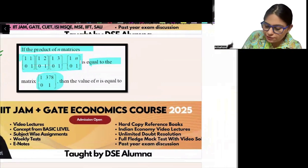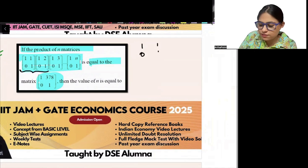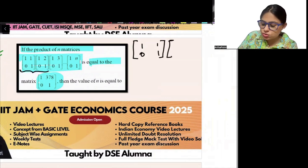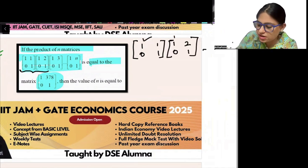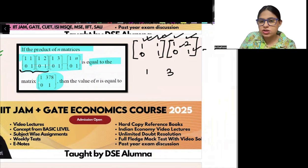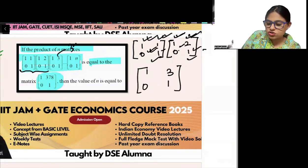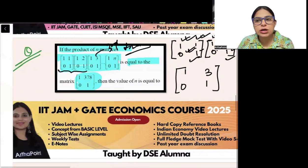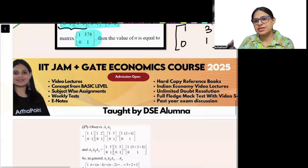Let's look at the first two observations. Multiplying matrix 1 = [[1,1],[0,1]] and matrix 2 = [[1,2],[0,1]] gives: top-left 1×1 + 1×0 = 1; top-right 1×2 + 1×1 = 3; bottom-left 0; bottom-right 1. This product [[1,3],[0,1]] is exactly the third observation. There is something very interesting happening here.